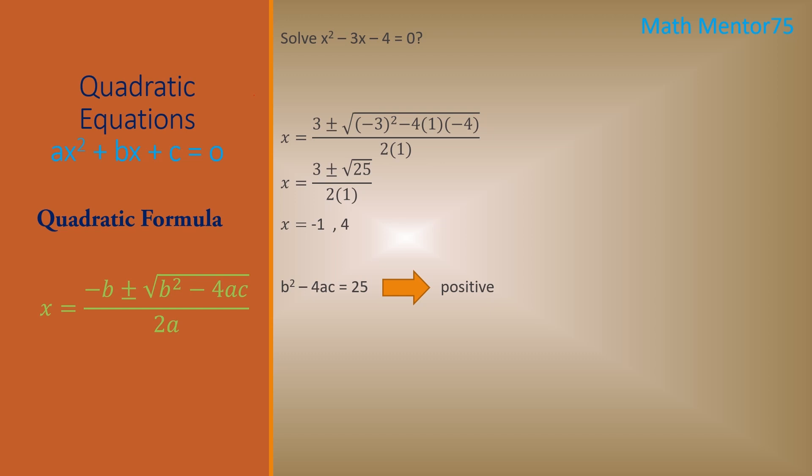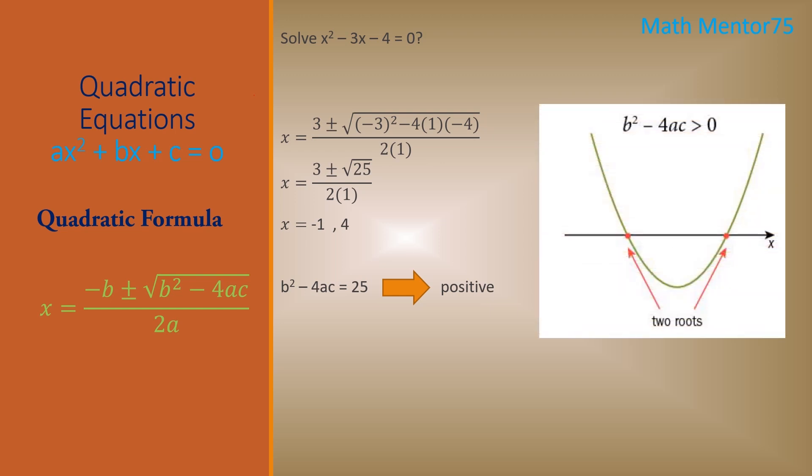Whenever the answer of the discriminant is positive, this means that our quadratic curve or quadratic equation will have two roots.